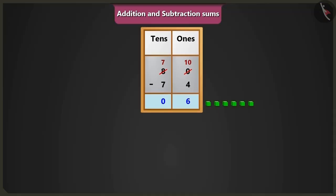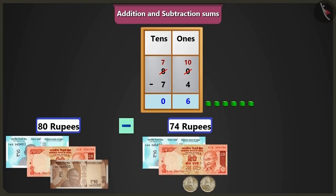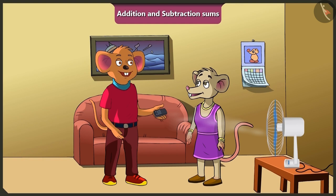Yes. So, in this way, if we will subtract 74 rupees from 80 rupees, it will be 6 ones means 6 rupees will be left. Now, let me call the uncle at the hotel.